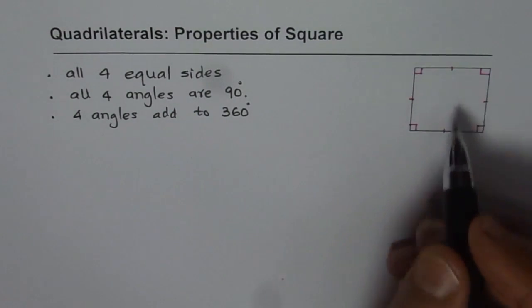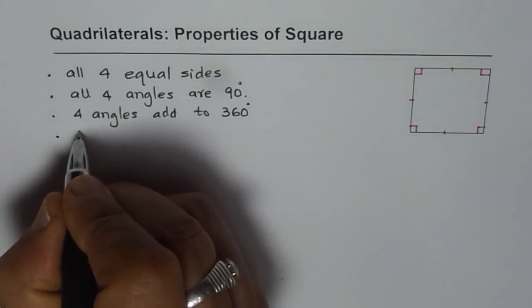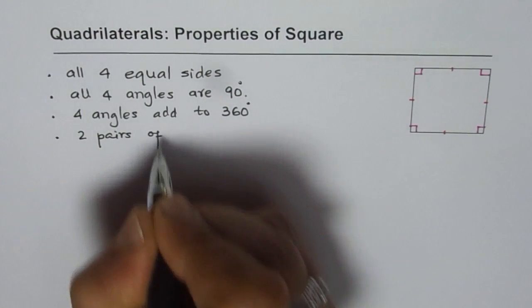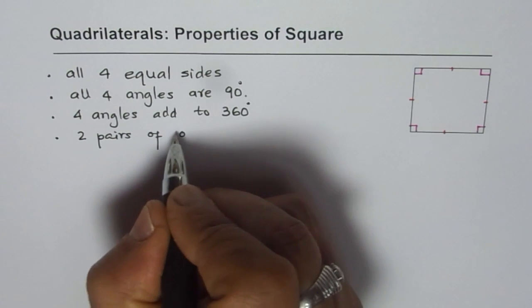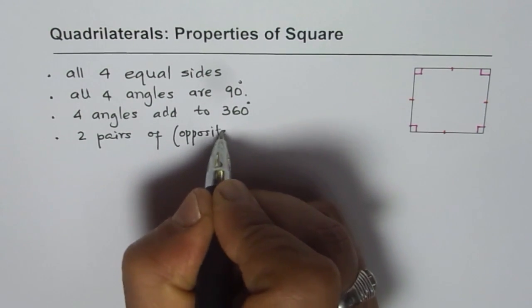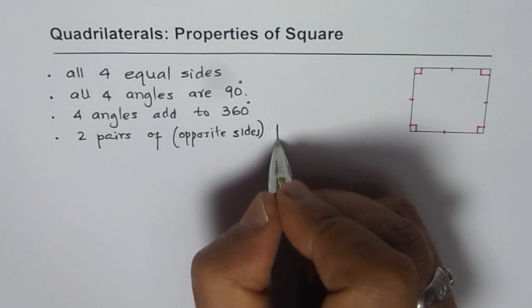Now are the opposite sides parallel? Yes they are. So we say it has two pairs of parallel sides. And these pairs are opposite sides. Parallel sides.